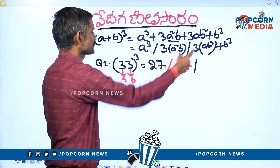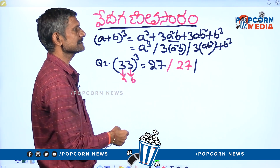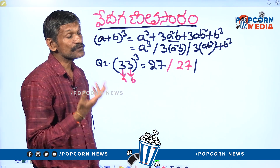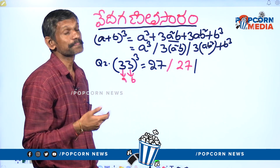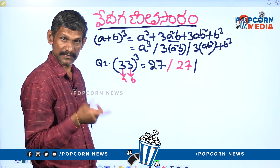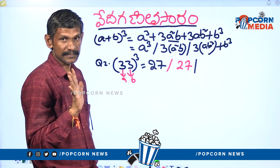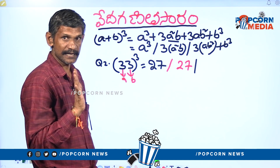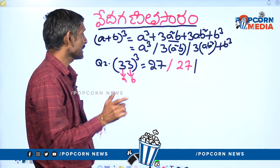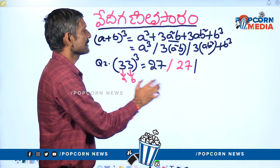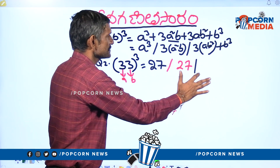Now 3ab squared: A times B squared. B squared — 3 squared is 9. Again, 9 times 3 is 27.